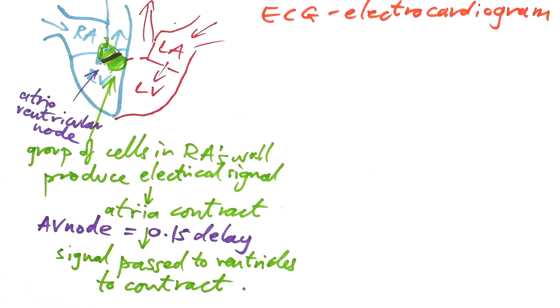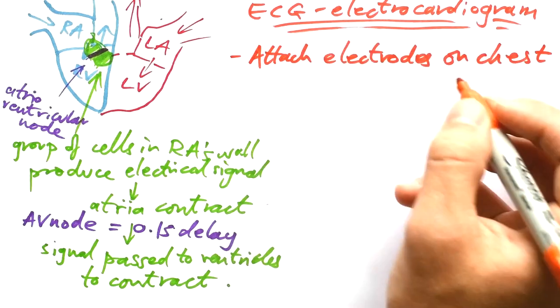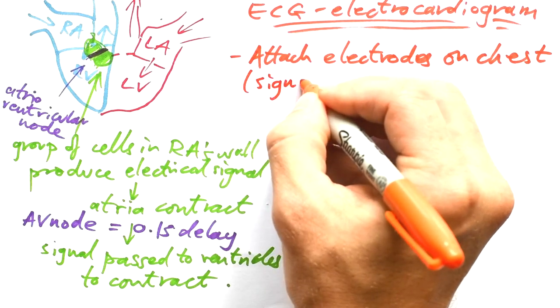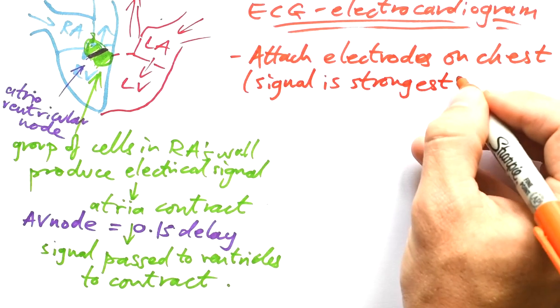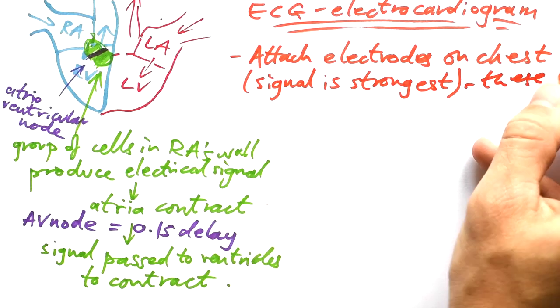An electrocardiogram. Electro is to do with electricity because we know that's involved. Cardio is to do with the heart. So what we do is attach electrodes on the chest because that's where the signal is strongest. If you put it on your legs, the signal isn't going to reach down there very well. And these measure PD.